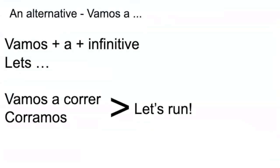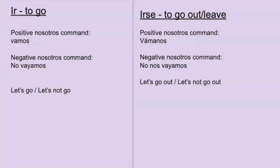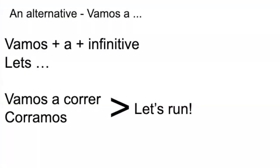The last thing I want to add is that there's another, simpler way to express 'let's' — you don't have to use the command form. Another way to say 'let's' is just 'vamos a' plus the infinitive. So 'vamos a correr' means 'let's run.' It can also mean 'we go run,' but another way to interpret it is 'let's run' — same as 'corramos' or 'vamos a correr.' Okay, so that's it for the Nosotros command form. See ya.